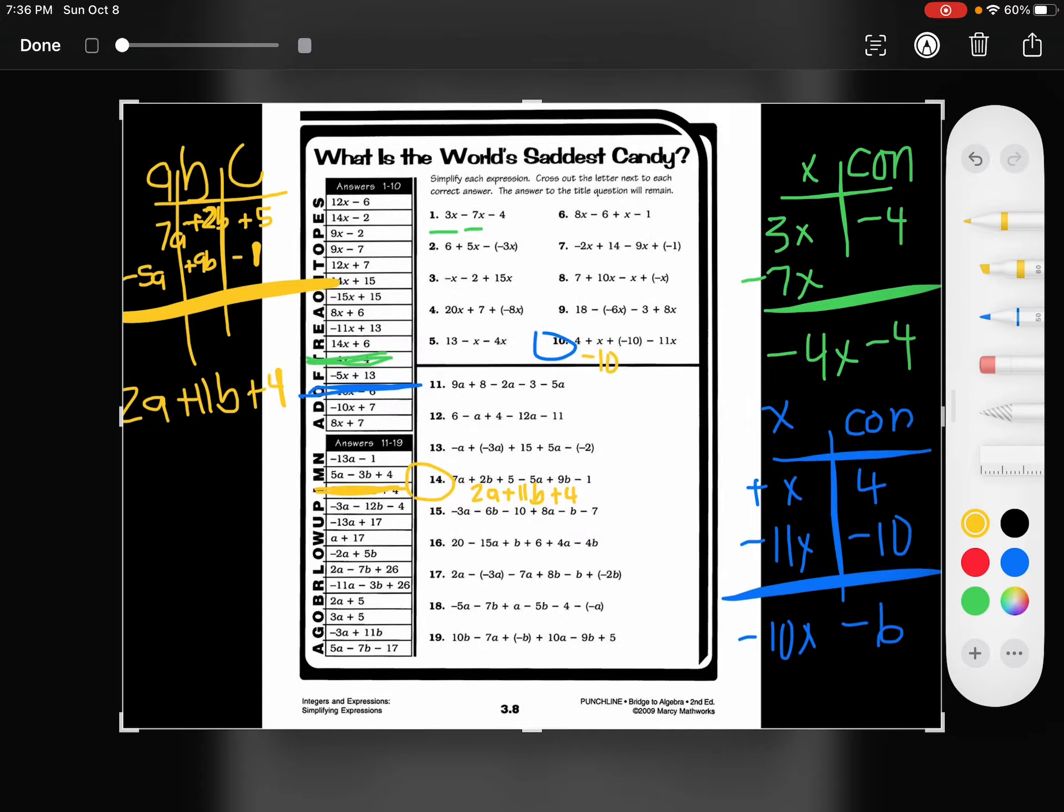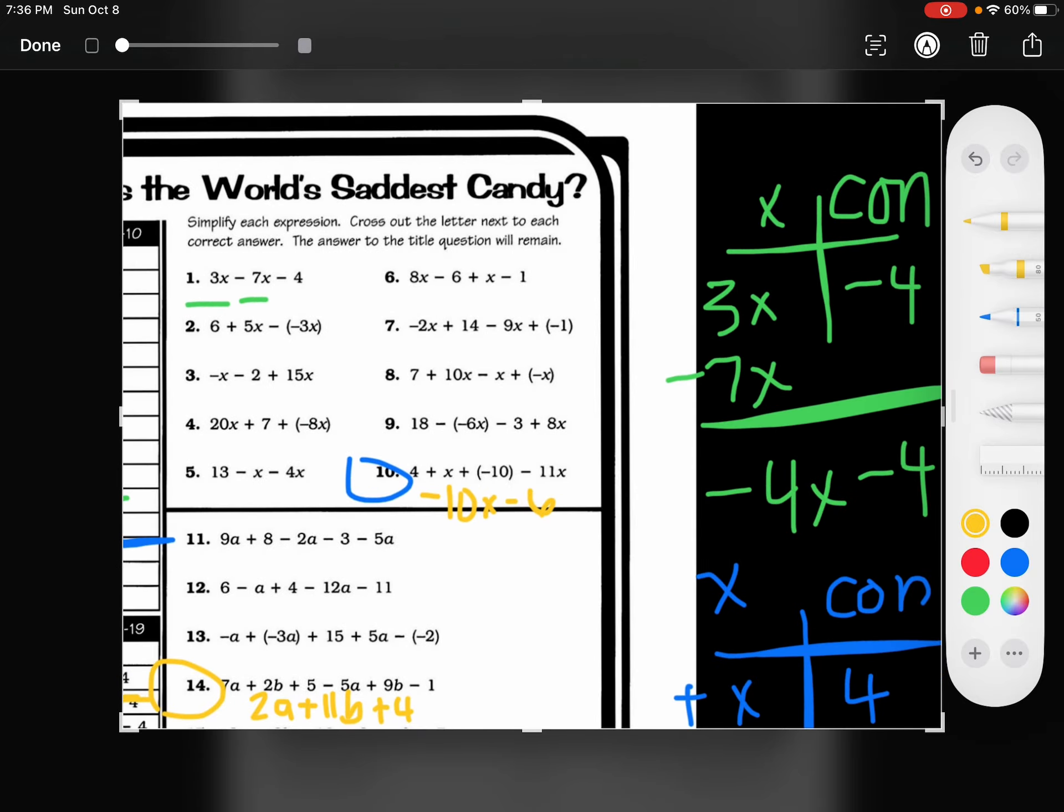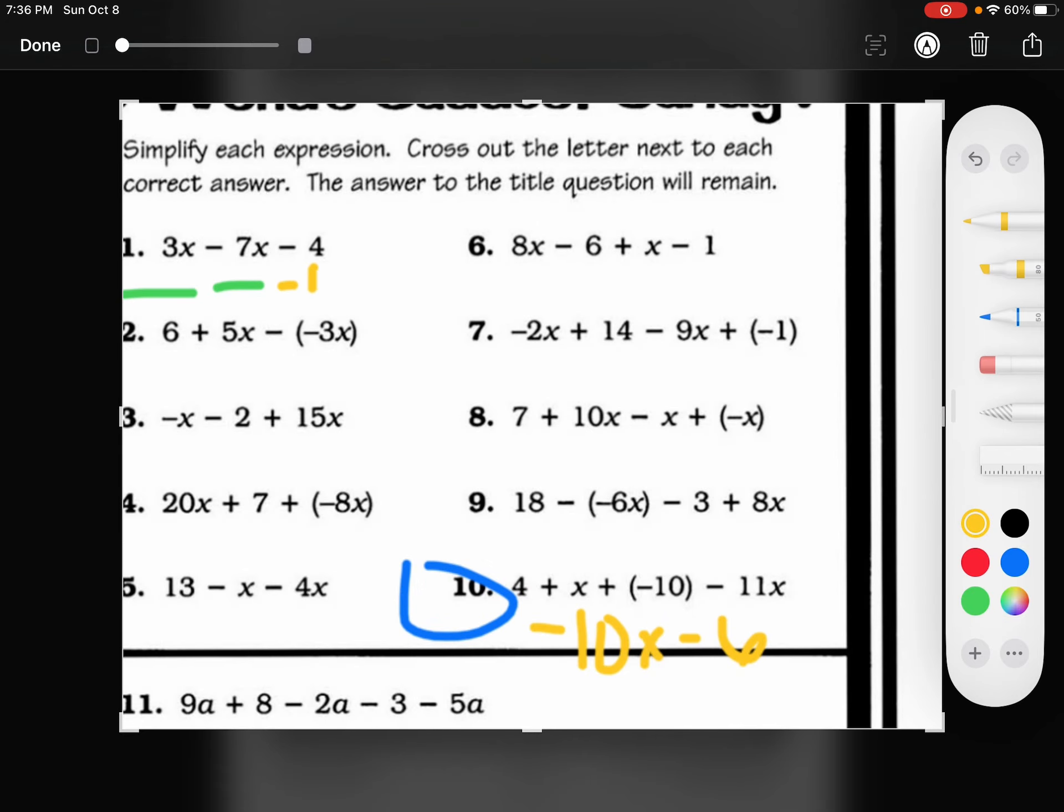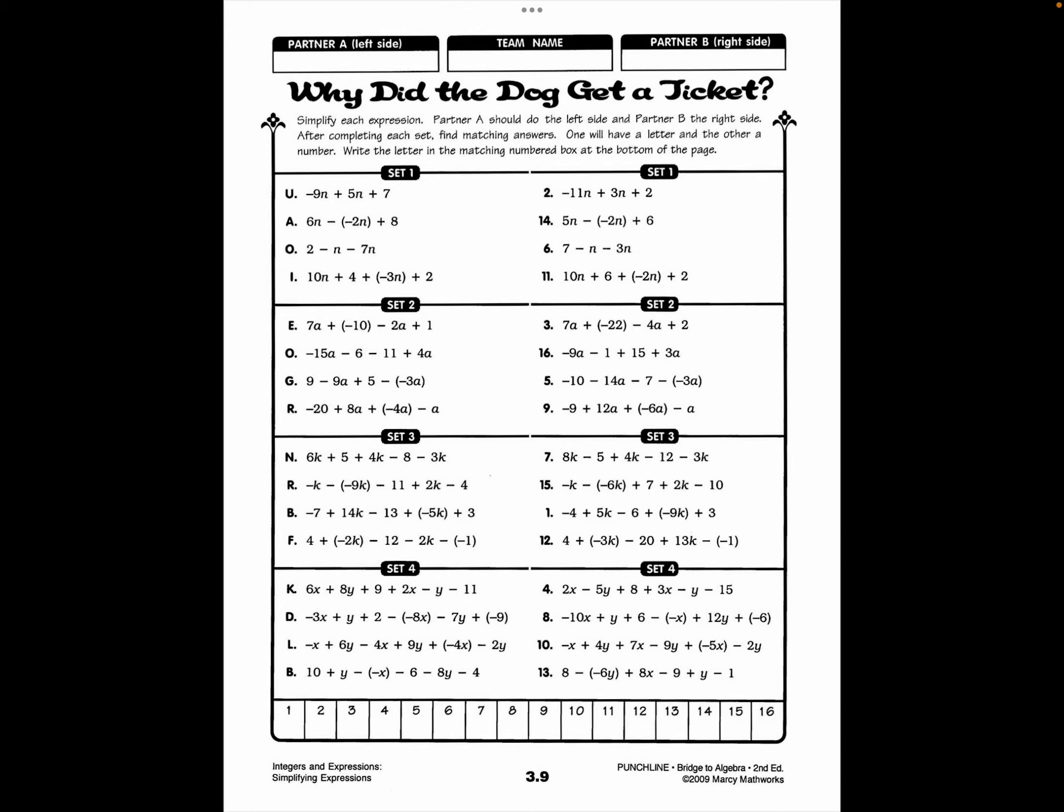And this one says negative 10x minus 6. And this one over here says negative 4x minus 4. So you want to make sure you're writing your answer with each one.